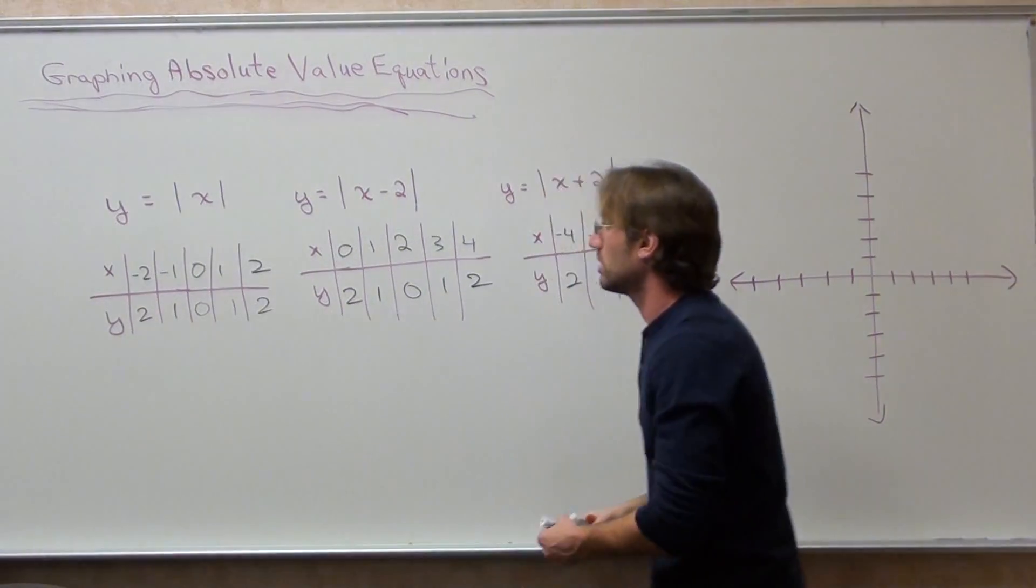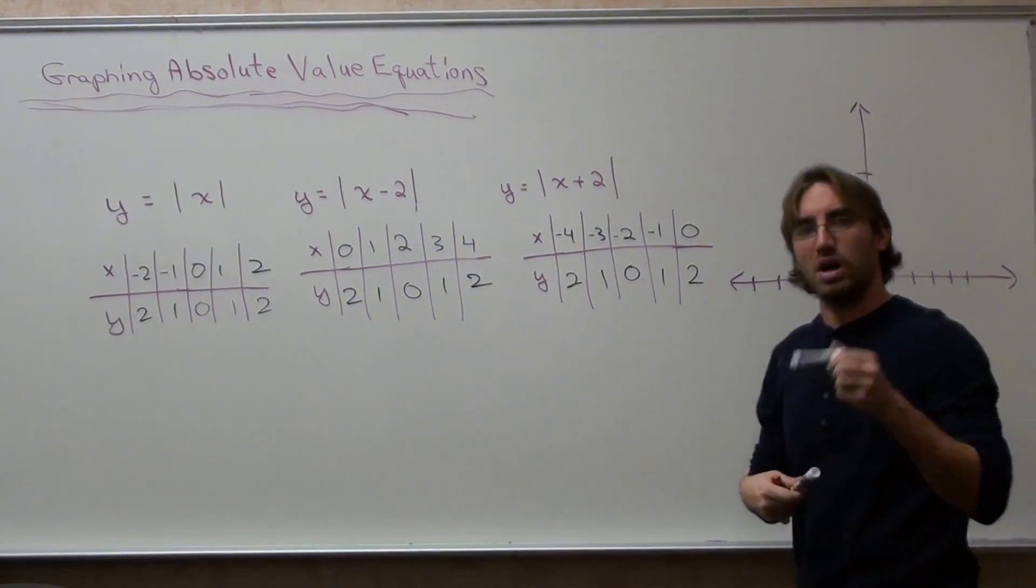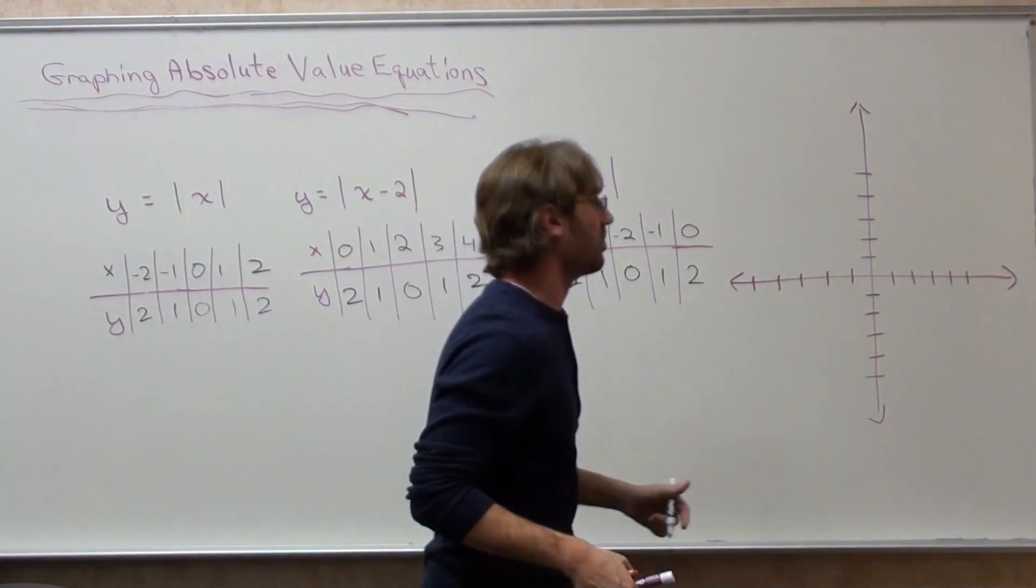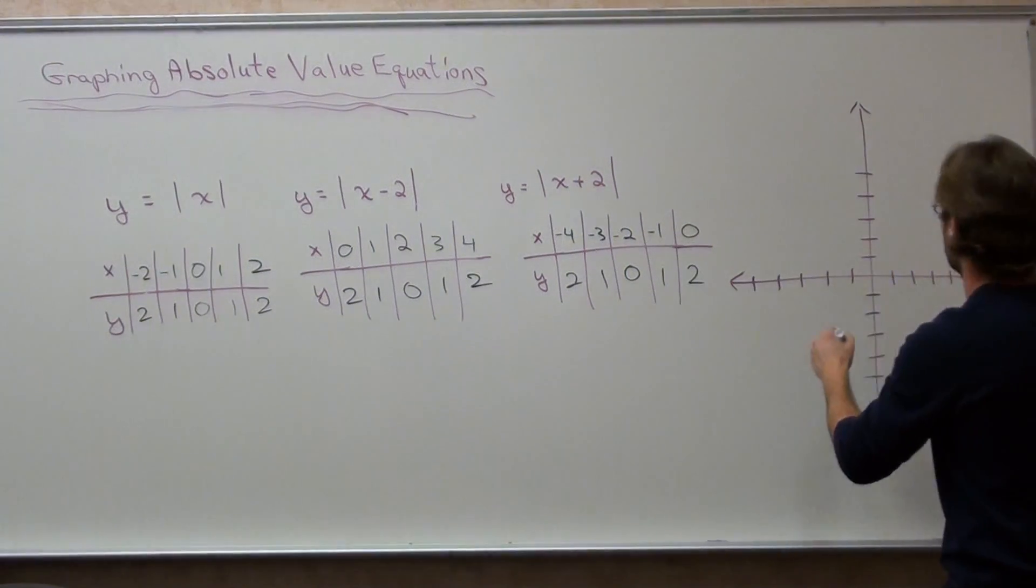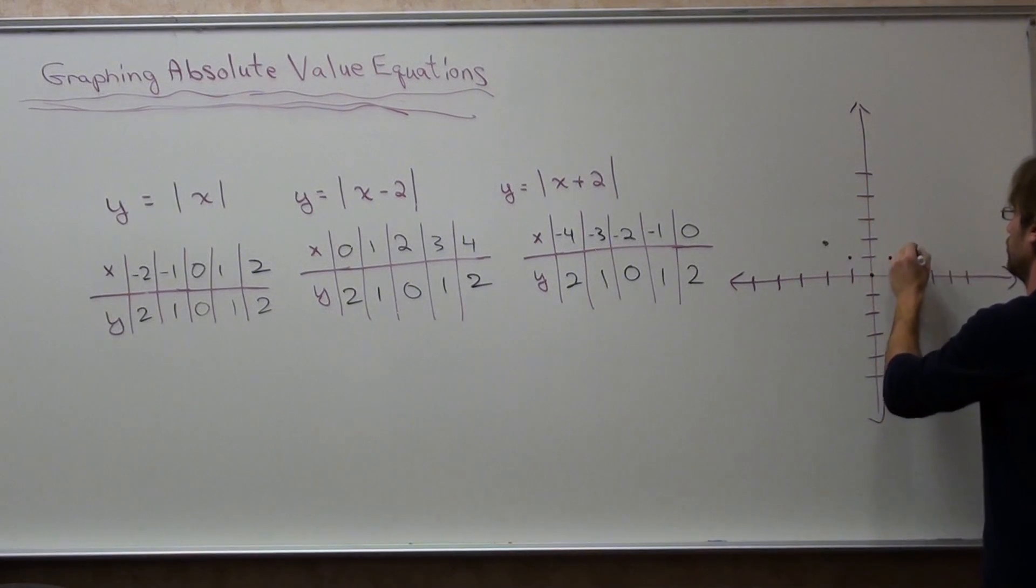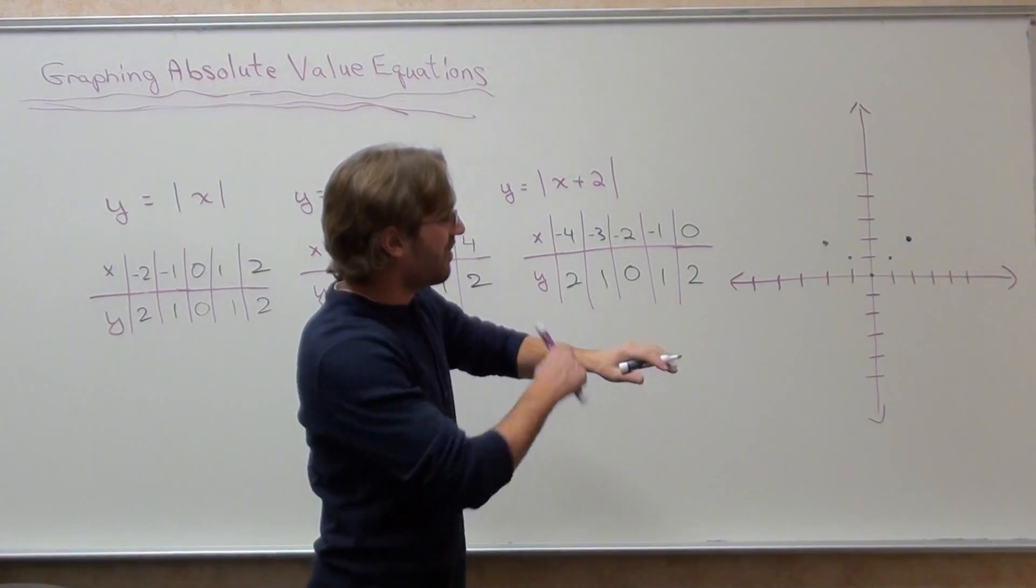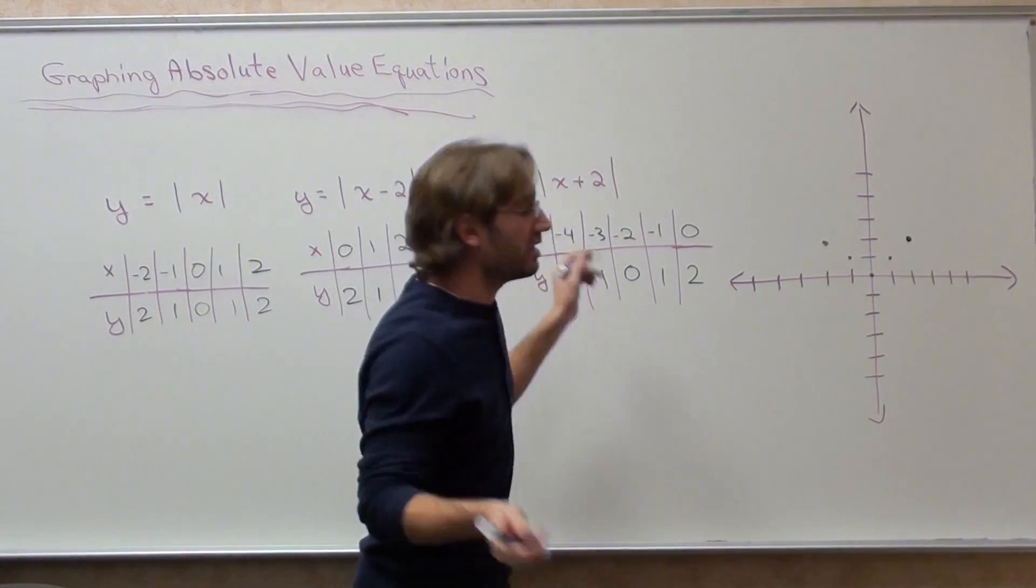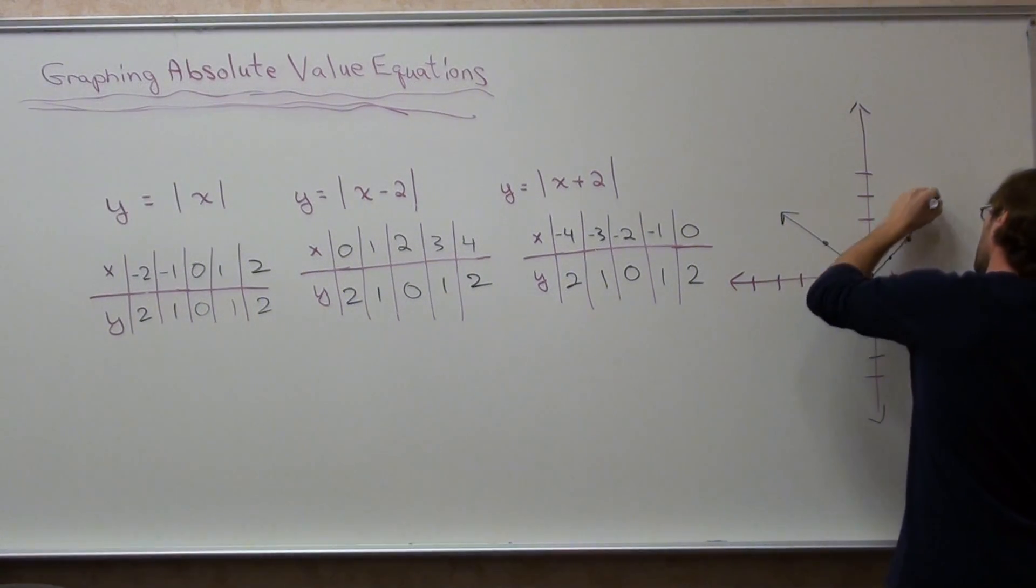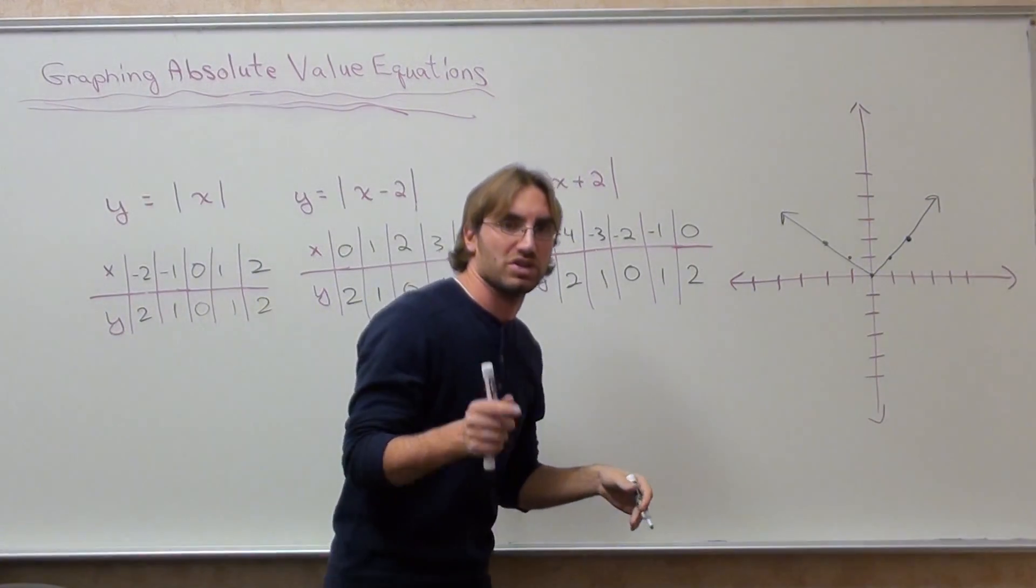I'm going to graph the first one first. Negative 2, 2, negative 1, 1, 0, 0, 1, 1, 2, 2. If I draw it out, it's a V. And the lines extend forever. That's what a basic absolute value function looks like.